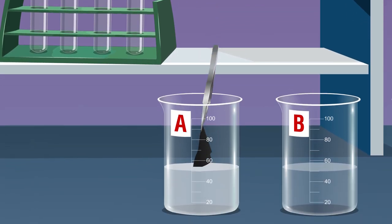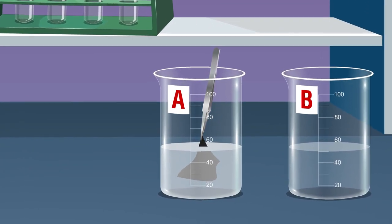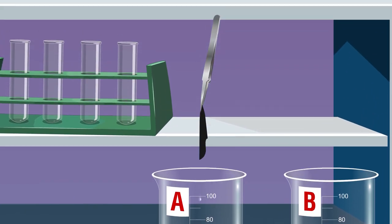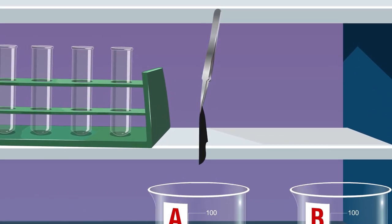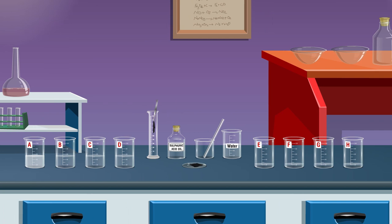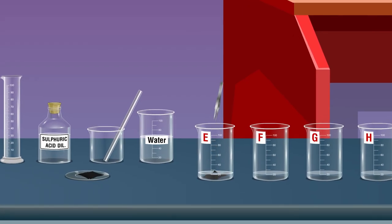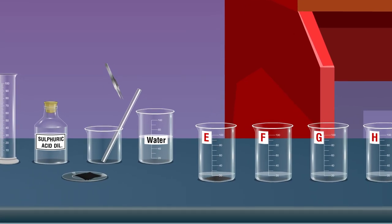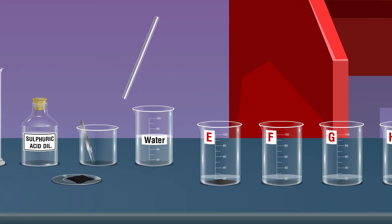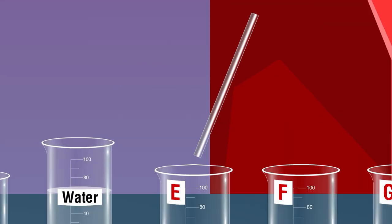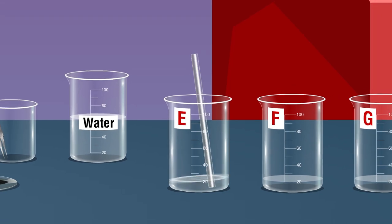Dip a small piece of black cloth in beaker A. Pick the cloth from the beaker using tweezers and dip it in dilute sulfuric acid in beaker E, then stir it gently with the help of a glass rod.